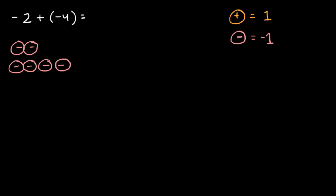So how many total negative integer chips do I have? I have one, two, three, four, five, six. So that's going to be six negative integer chips, or negative six.